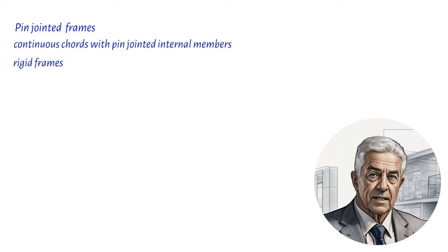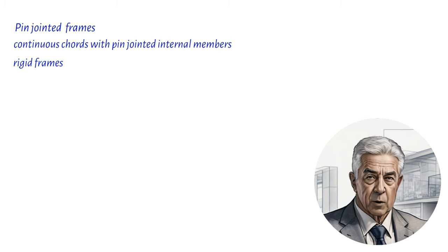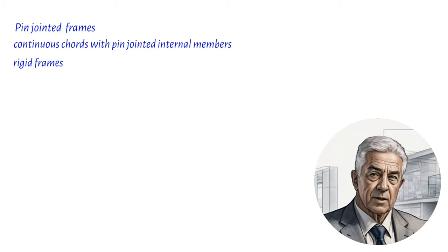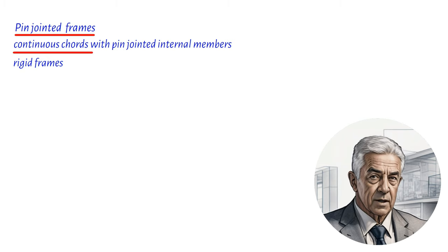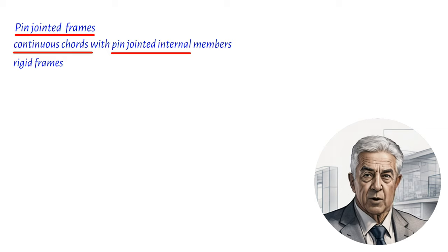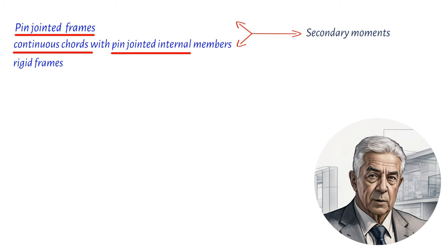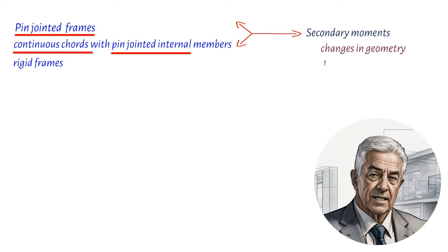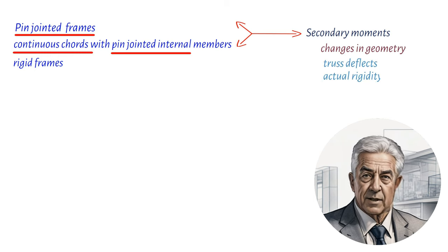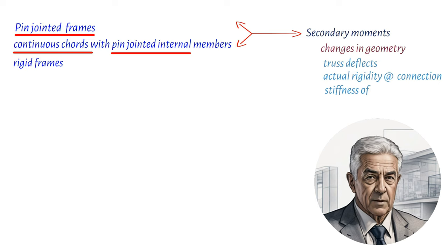Trusses can be analyzed using different models, including pin-jointed frames, continuous cords with pin-jointed internal members and rigid frames. Pin-jointed frames and continuous cords with pin-jointed internal members are preferred, as bending moments are usually not considered in joint capacity checks and connection design. However, secondary moments may be present due to factors such as changes in geometry as the truss deflects, the actual rigidity at the connection, and the stiffness of the members.